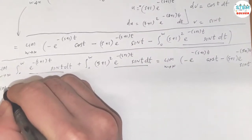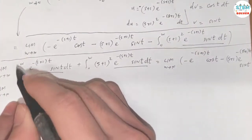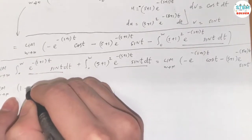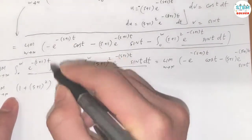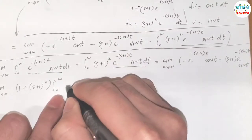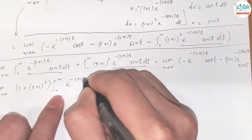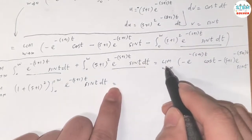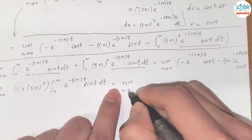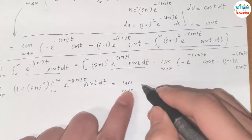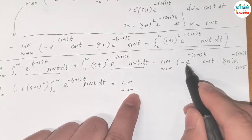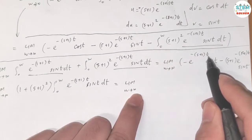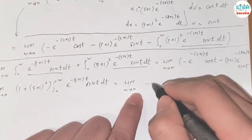So I have the limit as w goes to infinity. After factoring out -e^(-(s+1)t) from the boundary terms, I have: -e^(-(s+1)t) times [cos(t) + (s+1)·sin(t)], evaluated from 0 to w.